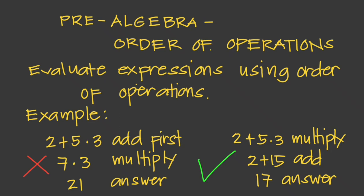When simplifying expressions, it is important that we simplify them in the correct order. Consider this example: the problem two plus five times three can be solved in two different ways. Without following the order of operations, we would be tempted to add first, then multiply, and we get the answer 21, which is not correct.